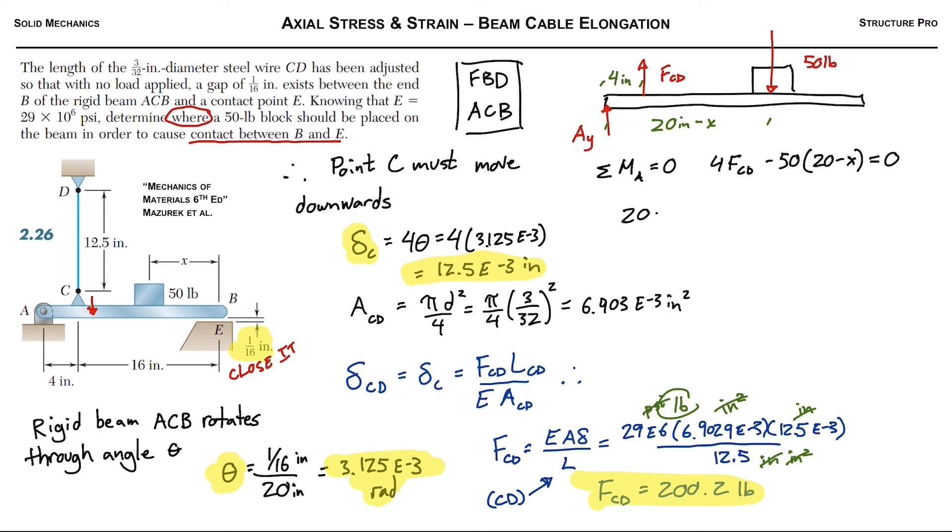You notice we can just put it to the other side of the equal sign and solve for X. We got 20 minus X equals 4 times the 200.2 that we calculated, all divided by 50. Calculate that to be 16, basically 16 inches. Then we just move the X over and the 16 over. Isolate X. X equals 3.99 inches.